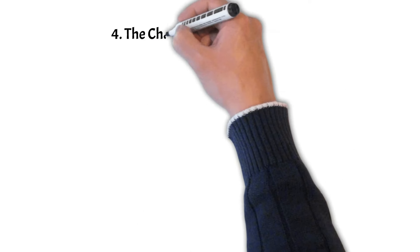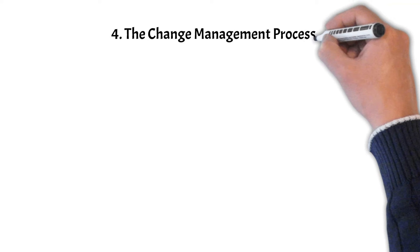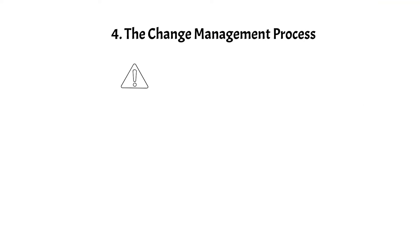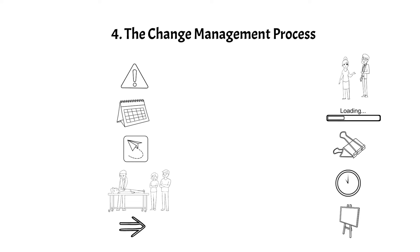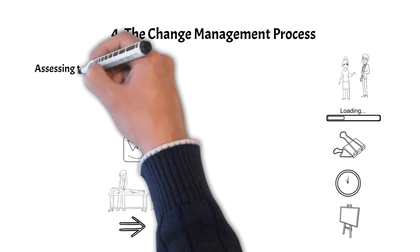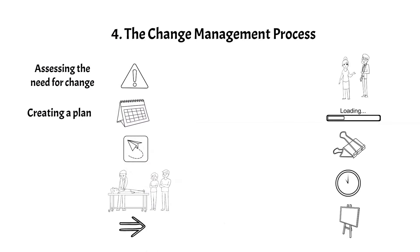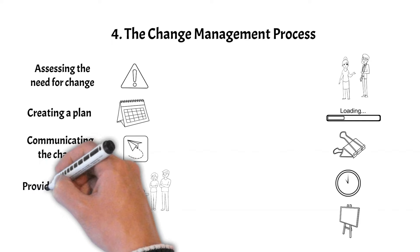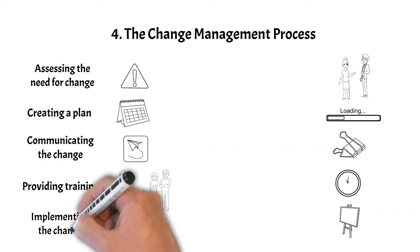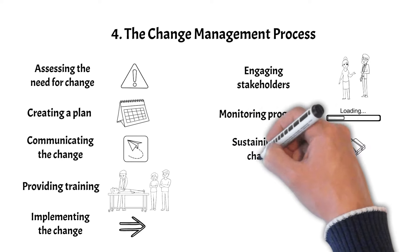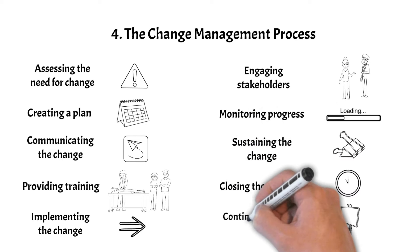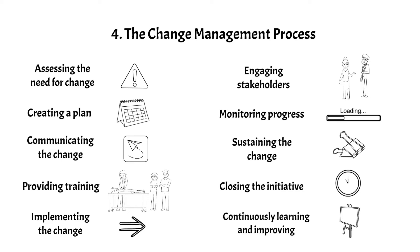The change management process is a structured approach that organizations use to plan, implement, and manage changes effectively. It involves assessing the need for change, creating a plan, communicating the change, providing training, implementing the change, engaging stakeholders, monitoring progress, sustaining the change, closing the initiative, and continuously learning and improving.